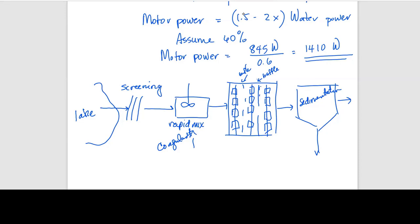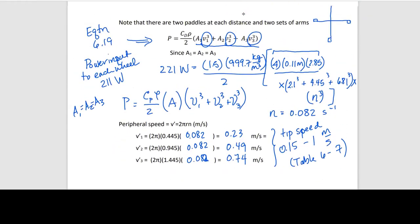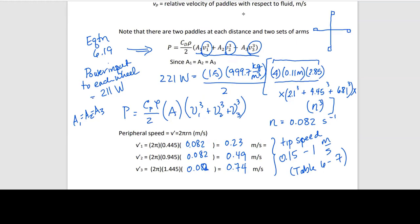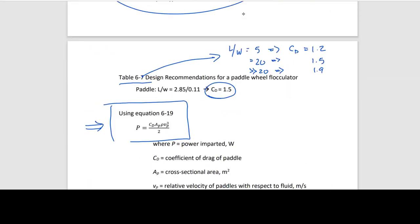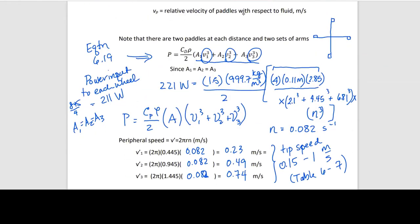A student asks about where the 211-watt power value comes from. It is simply the total shaft power of 845 watts divided by 4, since there are four paddle wheels on each shaft. So the power input to water per wheel is 845 divided by 4. That is correct — the 845 watts was for the entire shaft and we have four wheels on each.